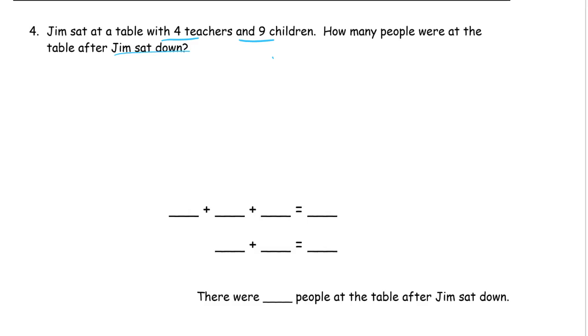So we've got four teachers. One, two, three, four. These are teachers, and there's four of them. And there's nine. One, two, three, four, five, six, seven, eight, nine. There's nine C for children. And there's one, Jim. We don't know if Jim is a child or a teacher or a parent. We just know he's a Jim.